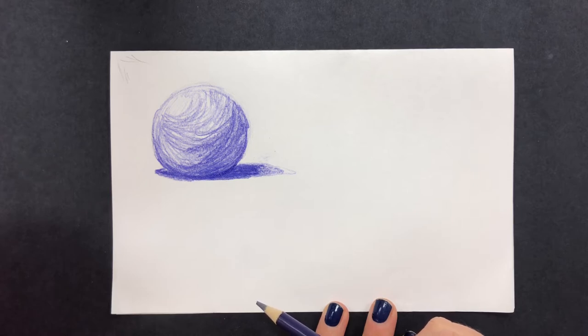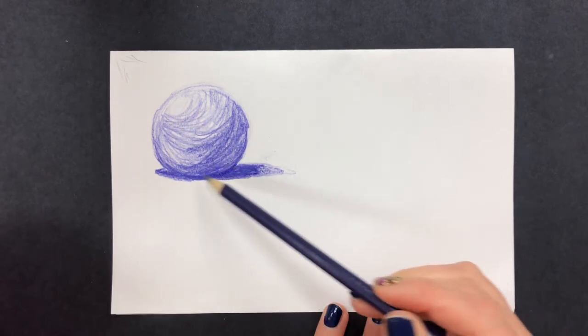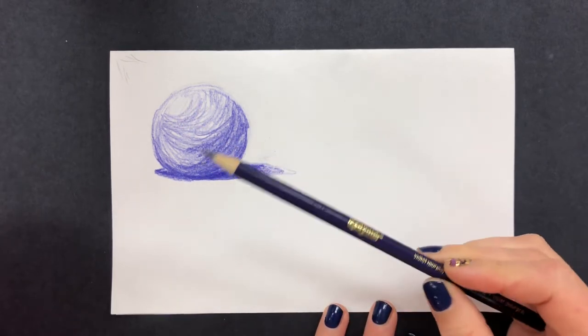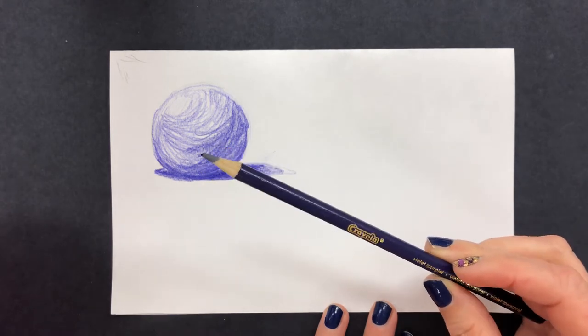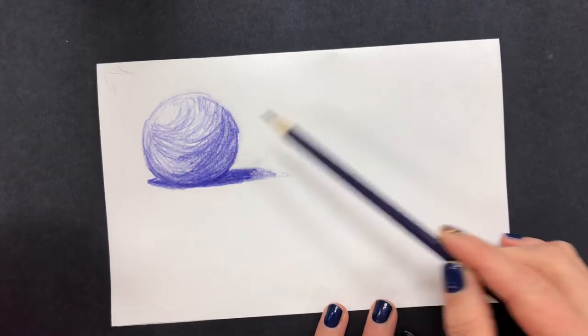In this tutorial I'm going to show you how to use highlights, core shadows, and cast shadows with a single color. You can use colored pencil or crayon to create the illusion of form or three-dimensional space.